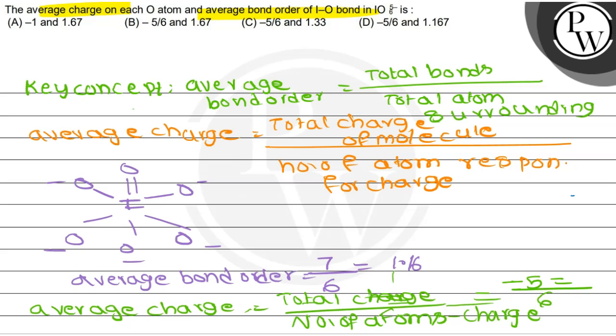The average bond order value is 1.167 and average charge is −5/6, so option D is the correct answer. Hope you understood well. Best of luck. Thank you so much.